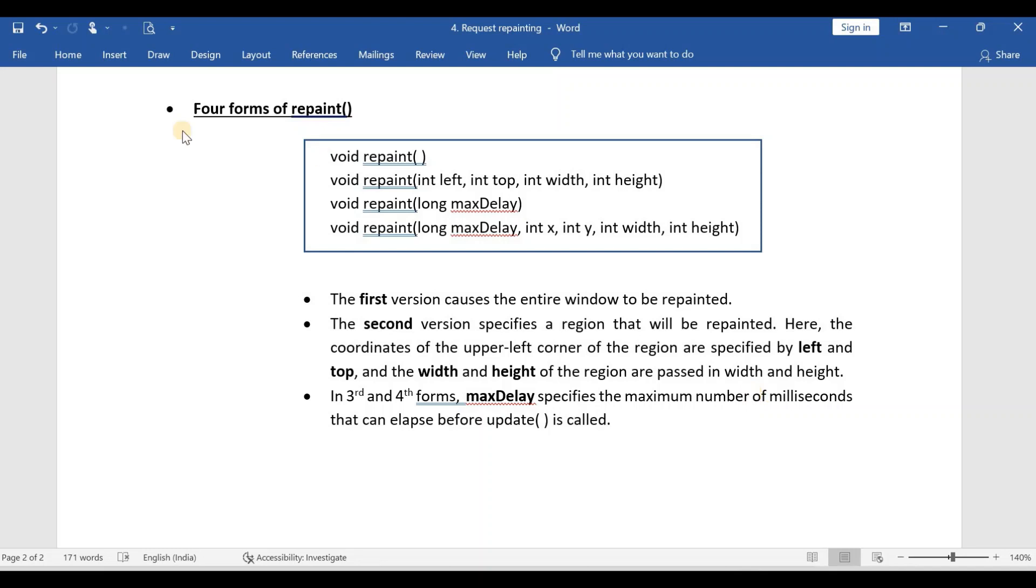And if the question asks you to write the four forms of the repaint, then remember all these points. These are all the four different forms of the repaint method. First one is a default one, no arguments.